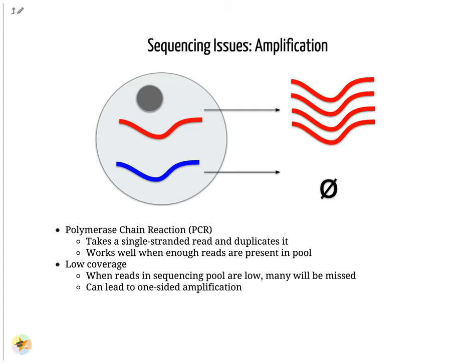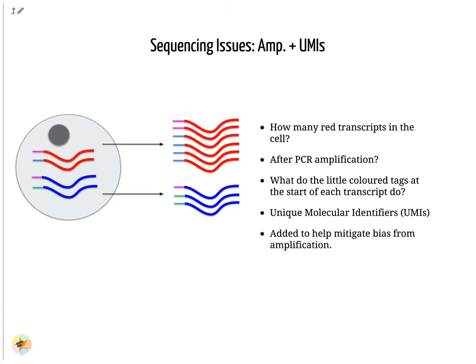However, in the case of single-cell products, the amount to amplify is very small, and many unique reads might be missed during this phase whereas others may be over-amplified. To guard against this type of amplification bias, we can add a random element to the barcoding. These random barcodes known as UMIs uniquely tag transcripts such that any two transcripts of the same gene are likely to have different random barcodes.